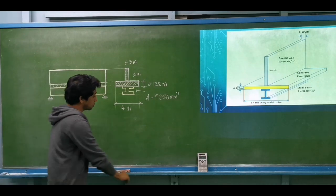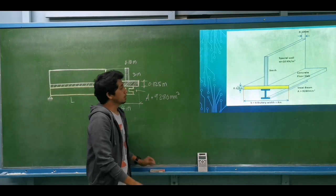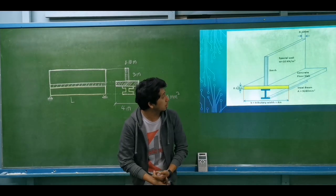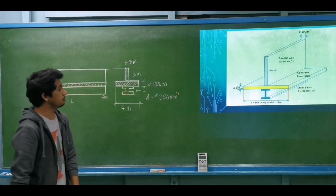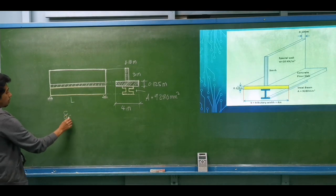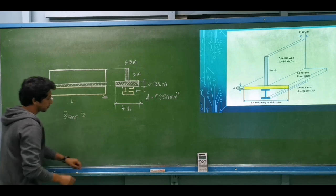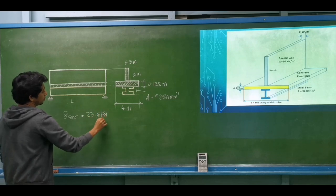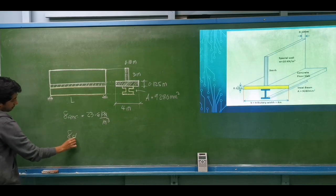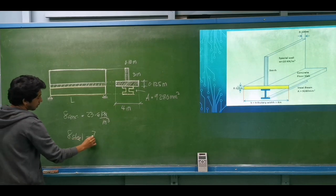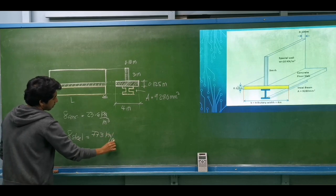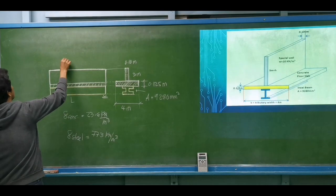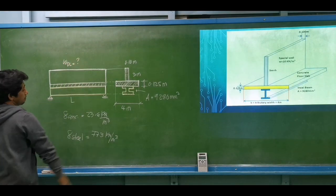Let's take example number one from your module. We have an I-beam or wide flange carrying a slab and a special wall. We have a steel beam and concrete. The unit weight of concrete, gamma, is equal to 23.6 kilonewtons per cubic meter based on our reference NSCP. The unit weight of steel is equal to 77.3 kilonewtons per cubic meter. We are looking for the uniform dead load to be carried by the beam.